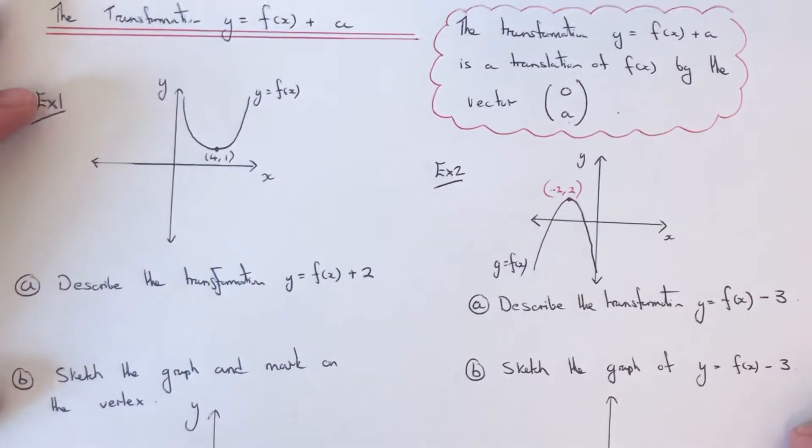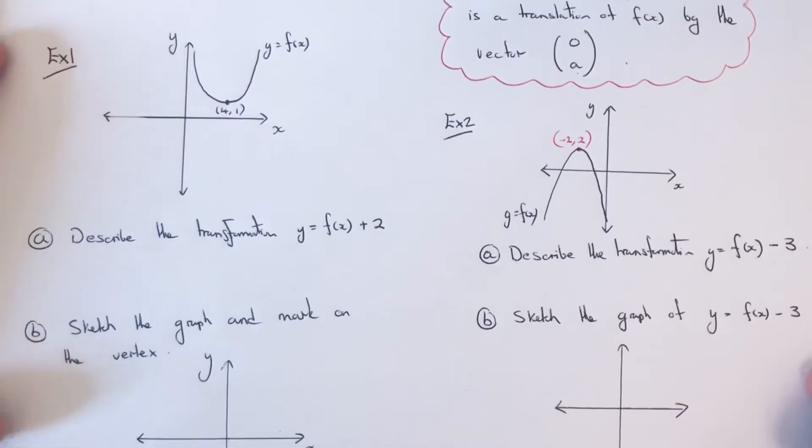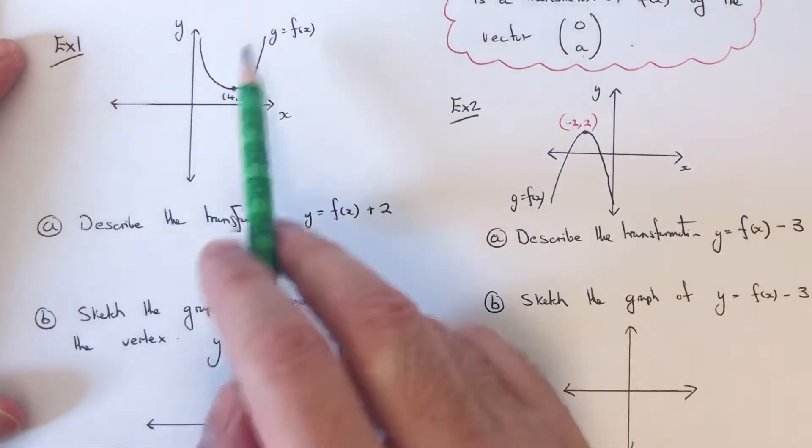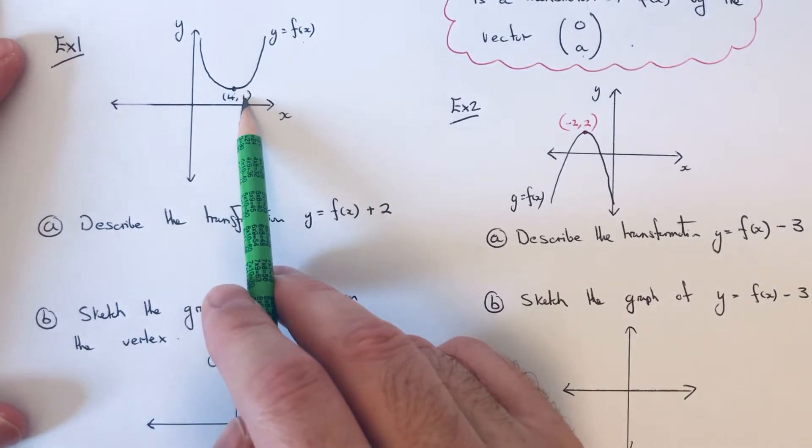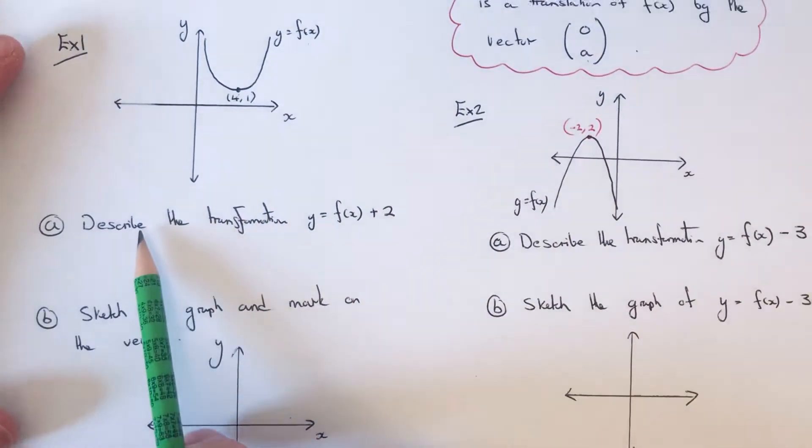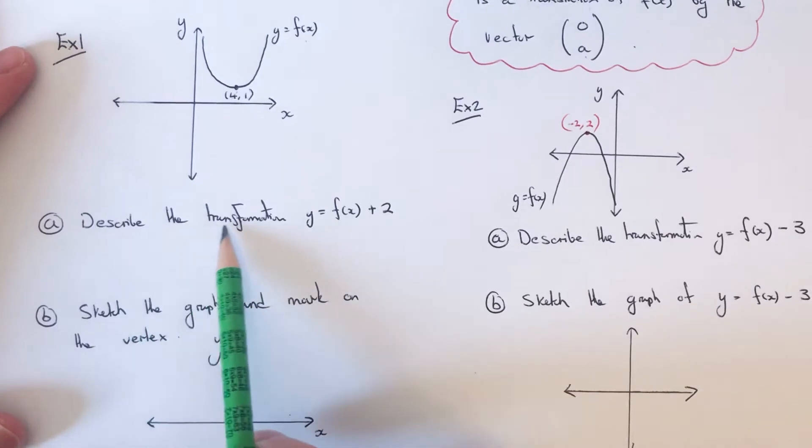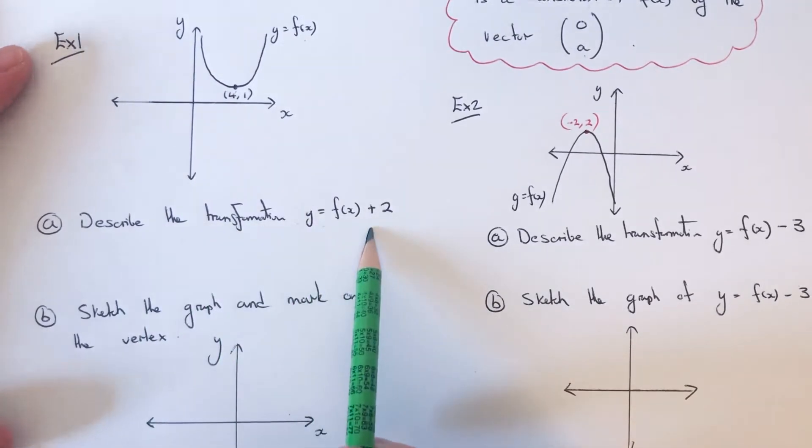So let's have a look at the two examples here. Example 1, we've got the graph y equals f of x with a vertex at 4, 1. And our first part of the question is describe the transformation y equals f of x plus 2.